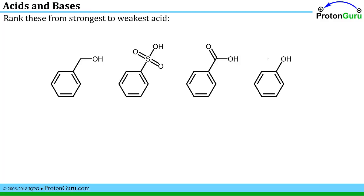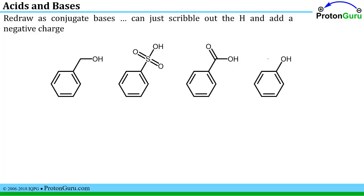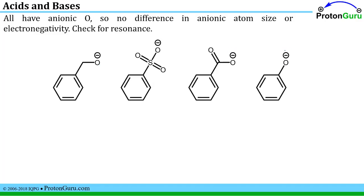Now let's rank this different series from strongest to weakest acid. We redraw them as conjugate bases — on a test you can simply scribble out the proton and draw a negative charge to save time. We see that all of these have the minus charge on an oxygen atom, so they are all the same size and electronegativity with the same hybridization. Since those factors are tied, we should check for resonance.